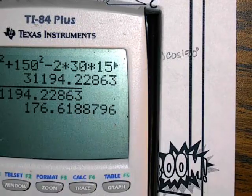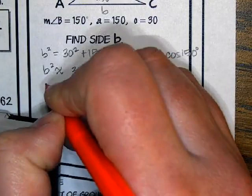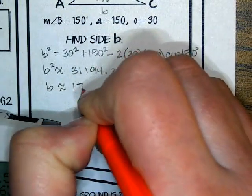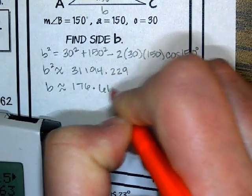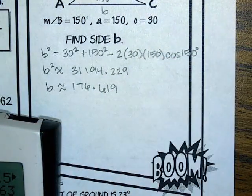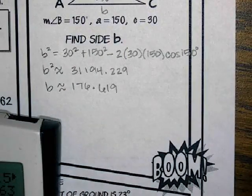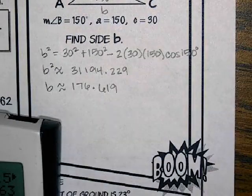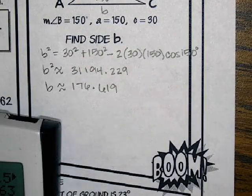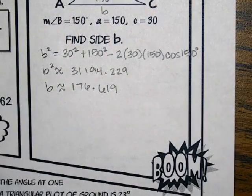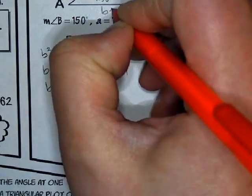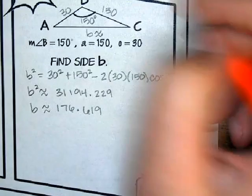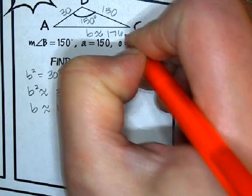We should get 176 point something. 176.619. Now, to find more missing information in the problem, we can use law of cosines or we can use law of sines. Most students have a preference for law of sines because it's a little bit easier. So I'm going to go ahead and label this, and say my side B is 176.619.